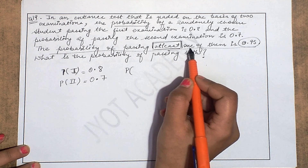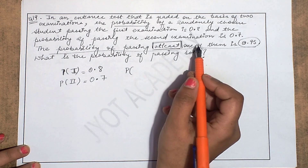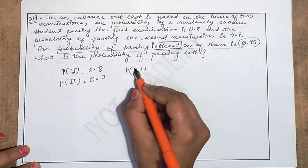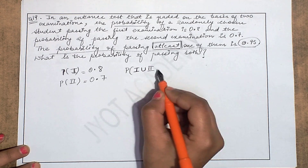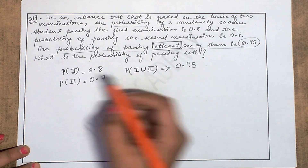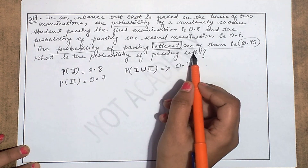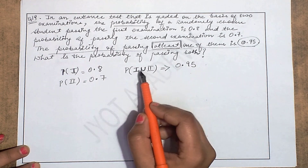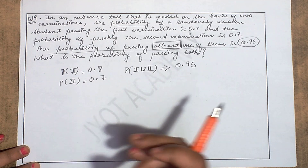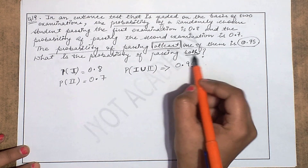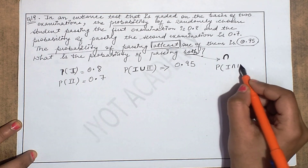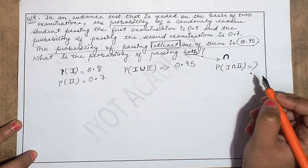At least means passing a minimum of one exam, or possibly both. So the maximum goes up to passing both exams — union is applied here because it covers passing the first OR the second. The probability of passing both exams (union) is given as 0.95. Now what is being asked is: what is the probability of passing both? That requires intersection. So you need to find the probability of first intersection second.